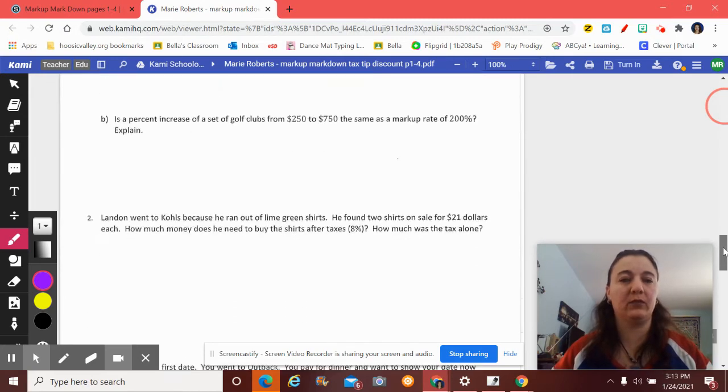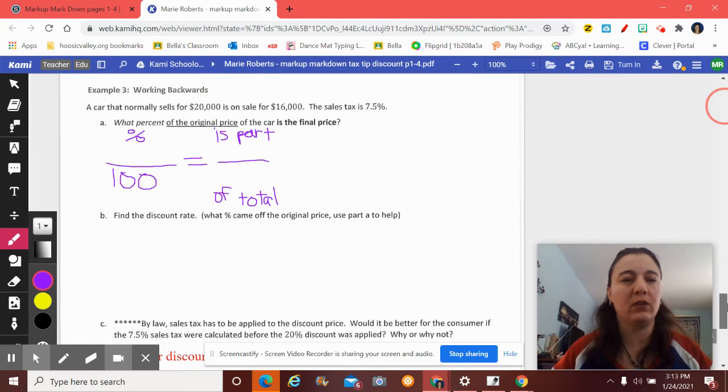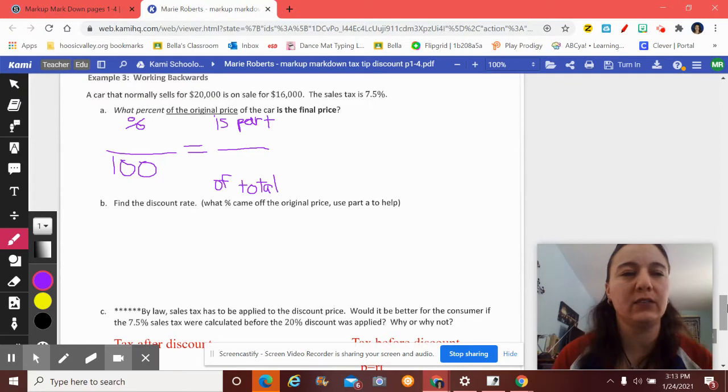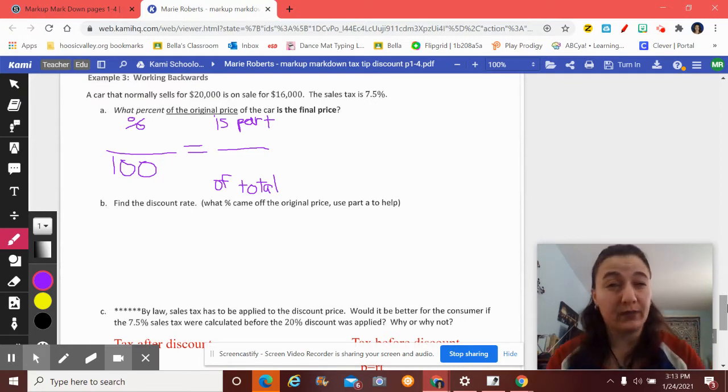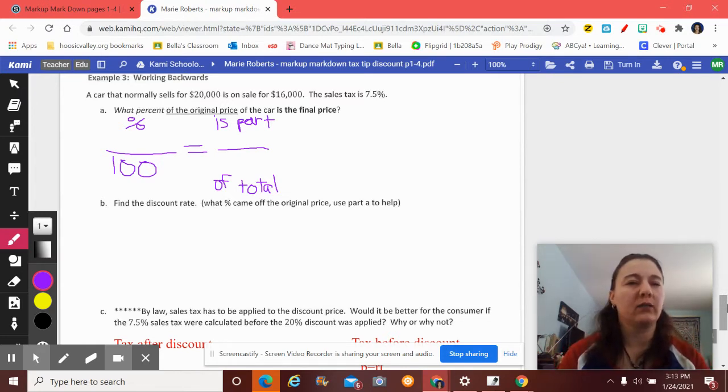I'm going to do question four with you. I'm on my laptop, so I can't write quite as fast as I do with my touch screen. A car that normally sells for $20,000, it's a pretty good price for a car, by the way, is on sale for $16,000. The sales tax is 7.5%. There's all the information you know. Not a lot of words. Kind of makes the problem easier. Less talking, more walking.